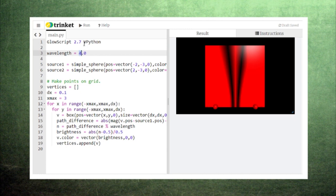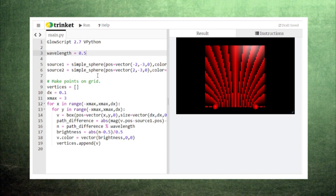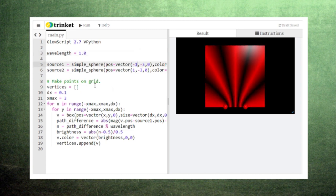You can change the fringe pattern by adjusting the wavelength, or changing the distance between the sources.